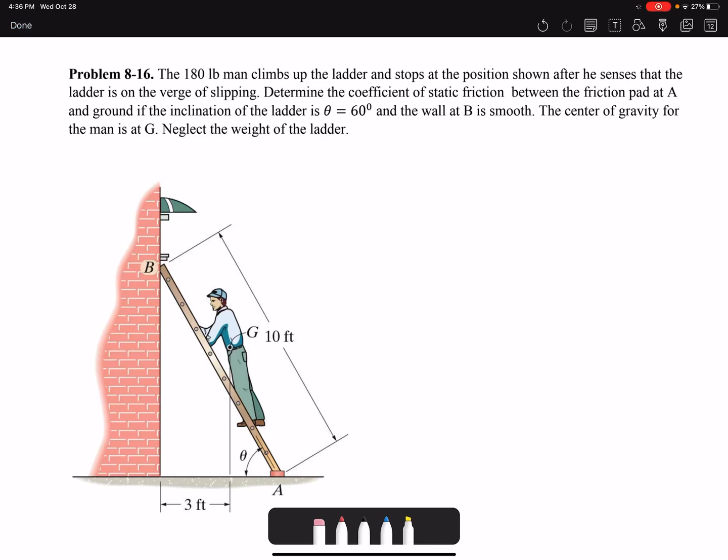Hello everyone, in this video I'm going to solve Problem 8-16. The 180 pound man climbs up the ladder and stops at the position shown after he senses that the ladder is on the verge of slipping.